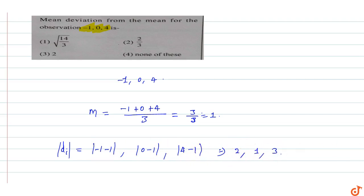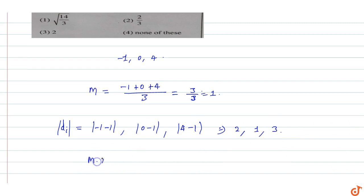Mean deviation is equal to summation of |di| upon total number of observations. So summation of |di| is 2 + 1 + 3, sum of the deviations upon total number of observations which is 3.